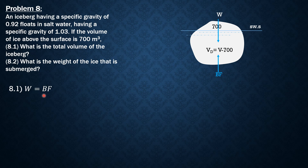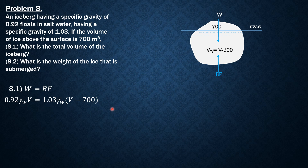while the buoyant force is the specific gravity of salt water times the specific weight of water times the volume displaced, which is V minus 700. So: 0.92 × γ_water × V = 1.03 × γ_water × (V − 700).